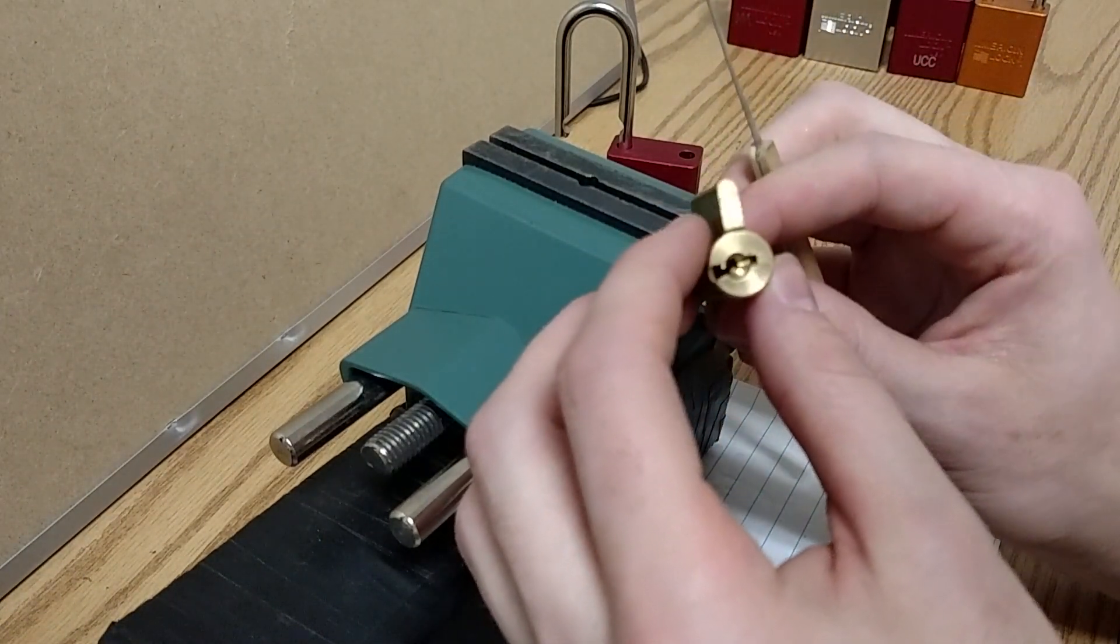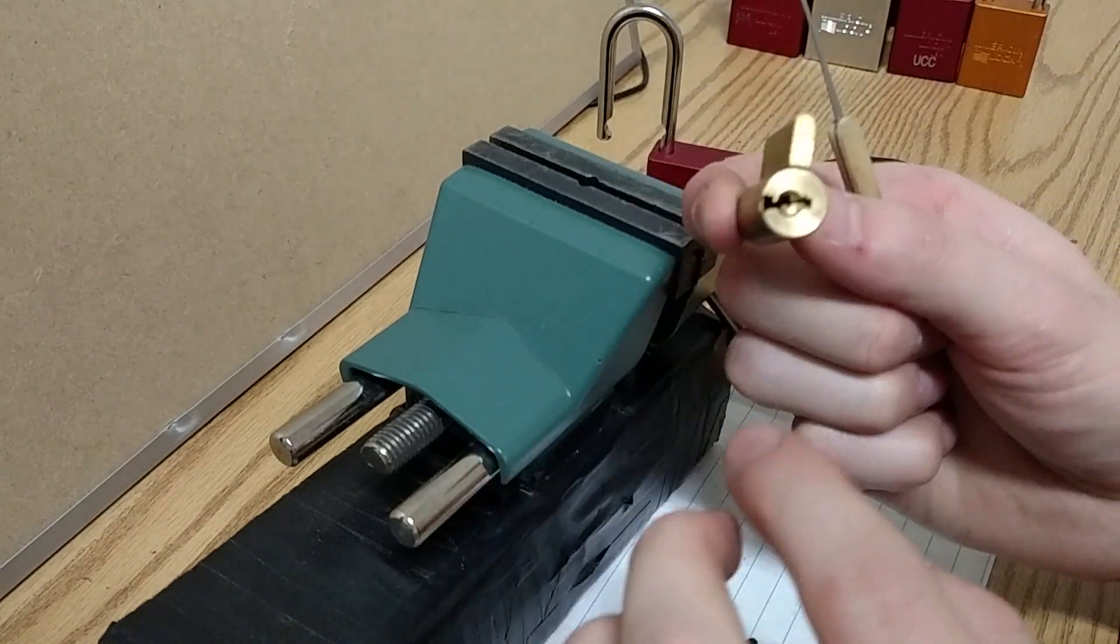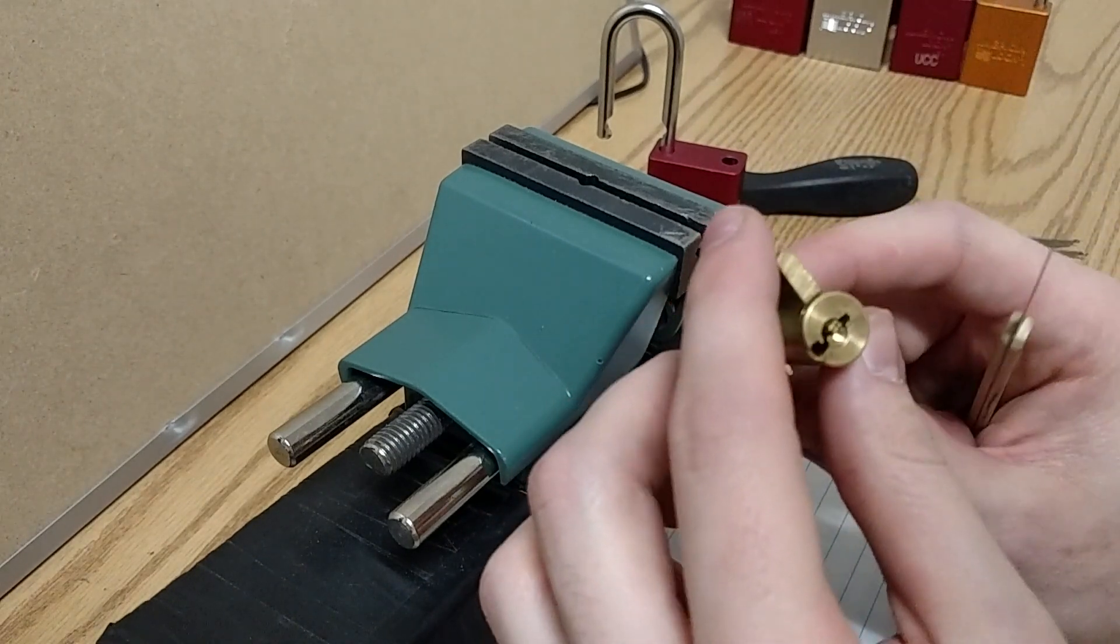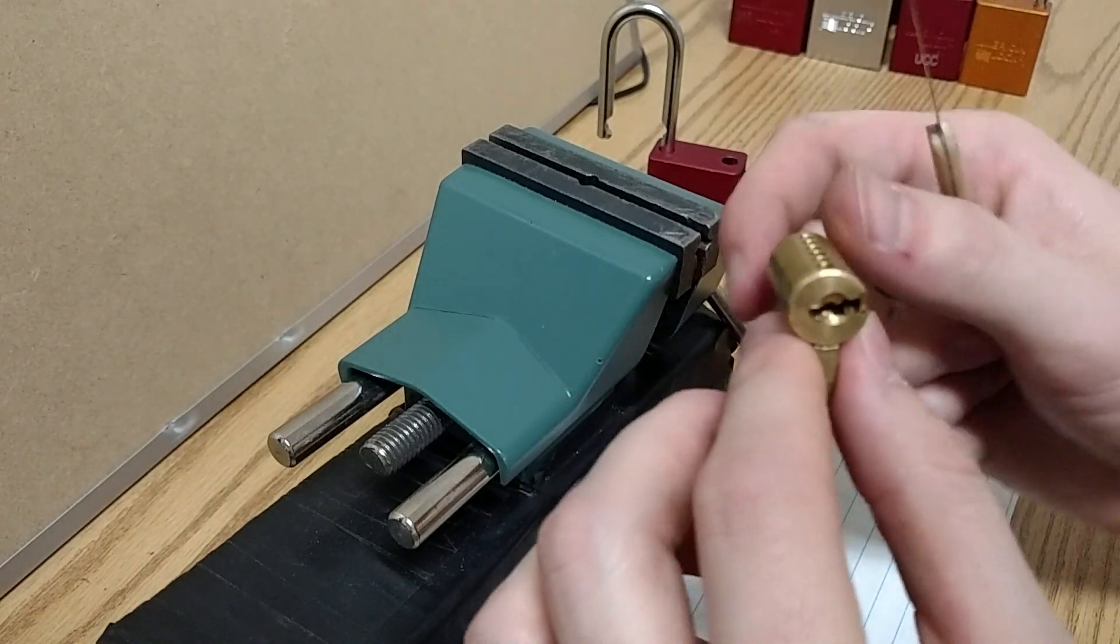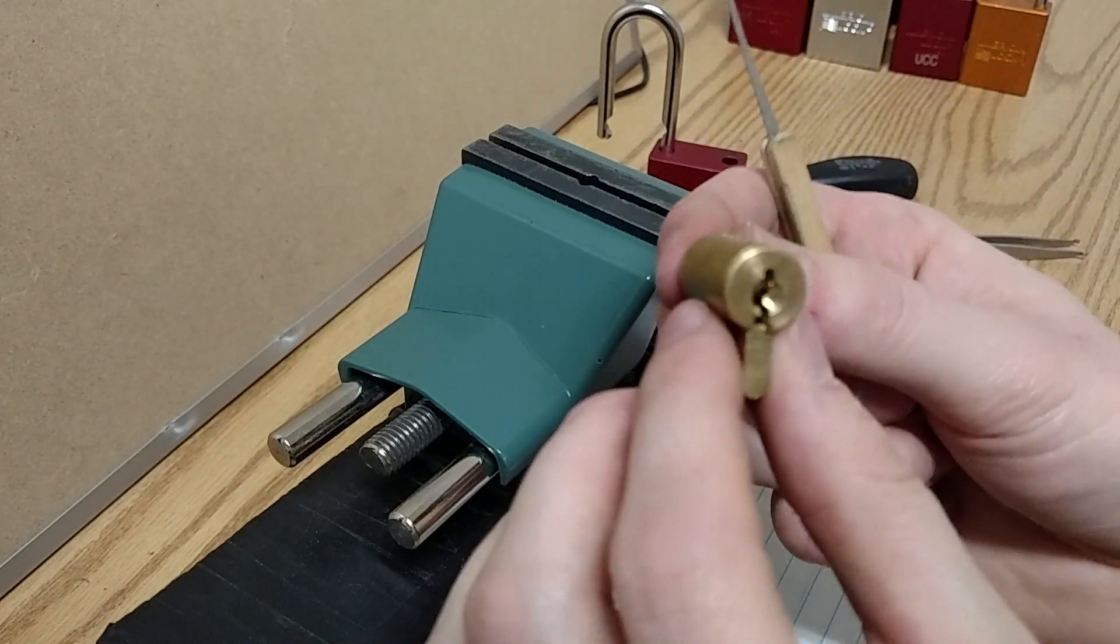From here, once you have it out of the lock body and picked, you're going to 180 it. But before you do that, make sure it's like this, otherwise everything's going to fall out of the bottom. From here, it's 180.